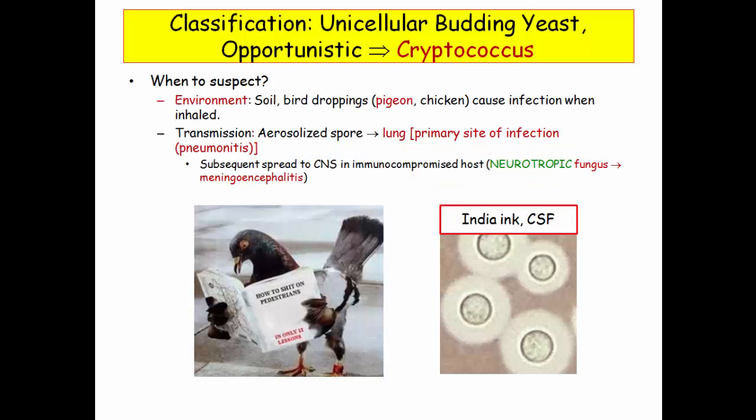Let's start with cryptococcus, which has a lot of unique and important characteristics. As a result, cryptococcus gets a lot of attention from the NBME. The ecology can be a big clue if pigeons or chickens are mentioned.